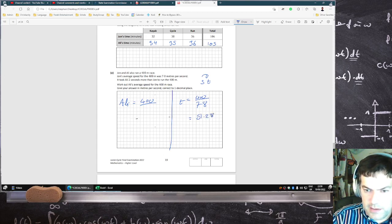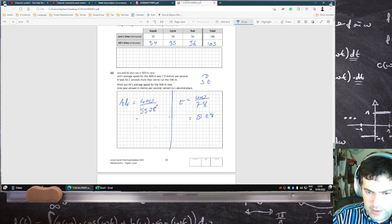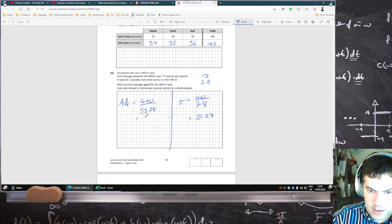51.28. So Ali took two seconds more, so 53.28. So his average speed to one decimal place is 7.5m per second.